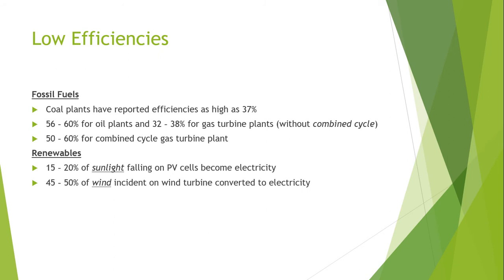The efficiency rates of fossil fuel-based power plants are relatively higher compared to renewable energy resources. For example, coal power plants have been reported to have an efficiency as high as 37 percent. It is reported that oil plants achieve 50 to 60 percent efficiency, and gas turbine plants achieve 32 to 38 percent without the combined cycle.